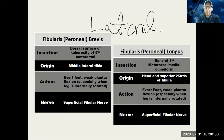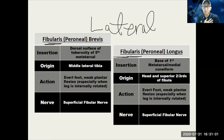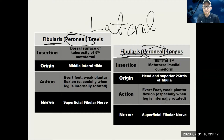Laterally we've got two main muscles — the fibularis longus and fibularis brevis, one long and one short. You might also see them called peroneal, especially in the running and athletic world, but in the anatomical world they're often called fibularis. Anything lateral is going to be the superficial fibular nerve, and anything lateral will evert the foot. Eversion is the main action of the lateral compartment of the lower leg.